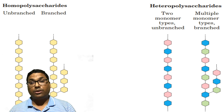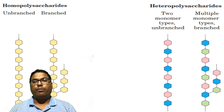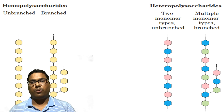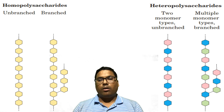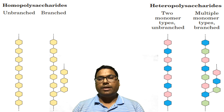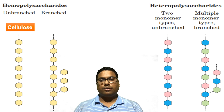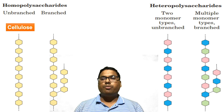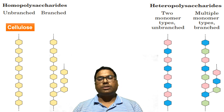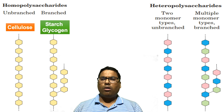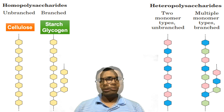in heteropolysaccharides there are two or more monosaccharide units linked together by the glycosidic bond. Among homopolysaccharides, there are unbranched types like cellulose, and branched types — one example is starch or glycogen.